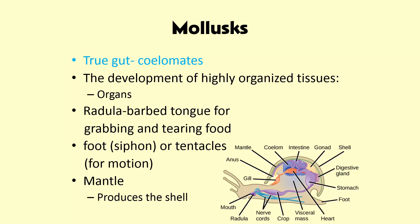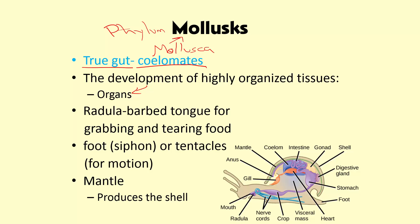Moving into the molluscs — the phylum Mollusca. The molluscs are the first organisms on our planet to show a true gut, a true body cavity — the coelomates. So molluscs have a true coelum, which allows for the development of highly organized tissues, such as organs. Being a coelomate means you have a body cavity that allows for the development of specialized organs, and this is important because now we can develop a true digestive system.